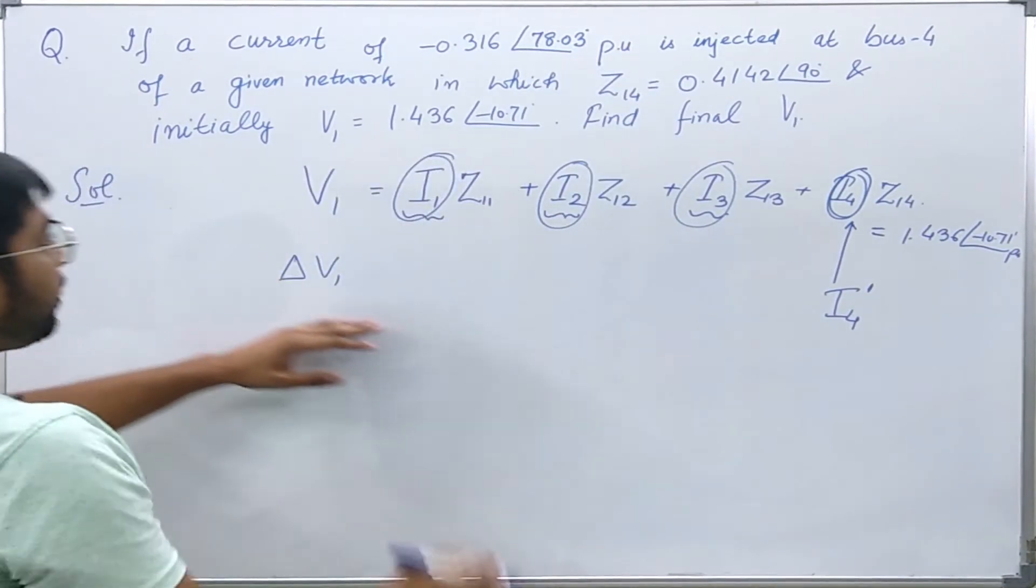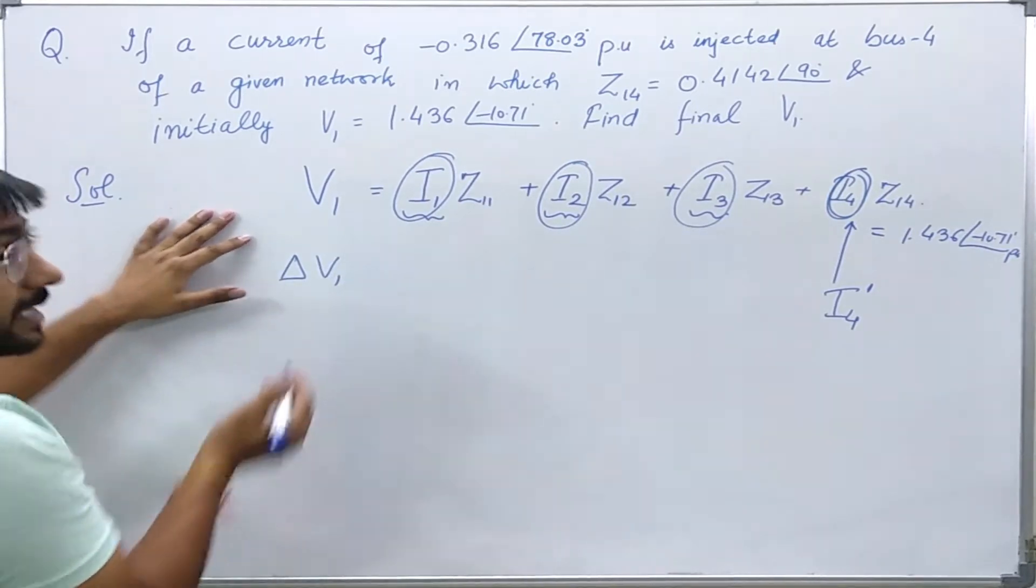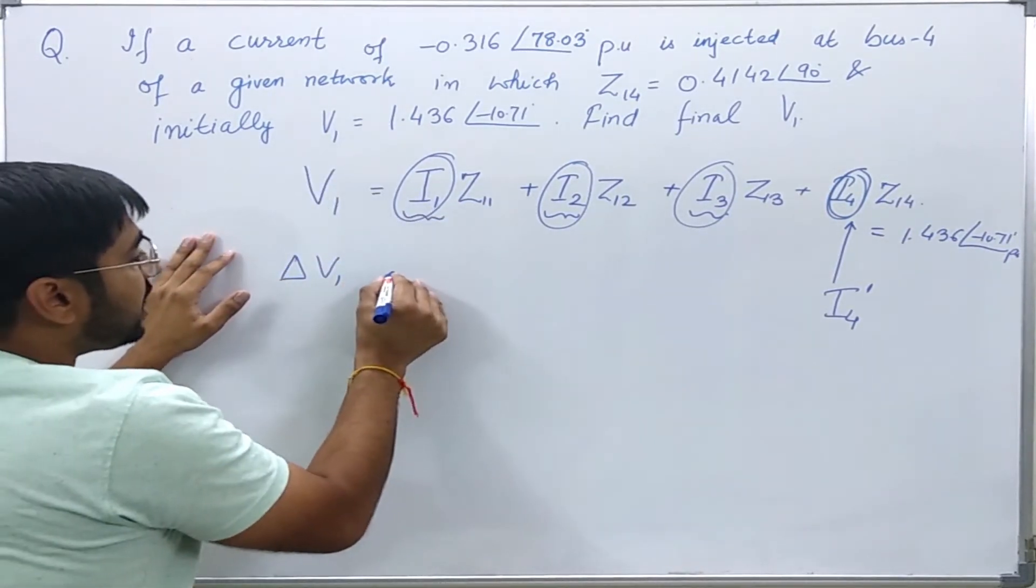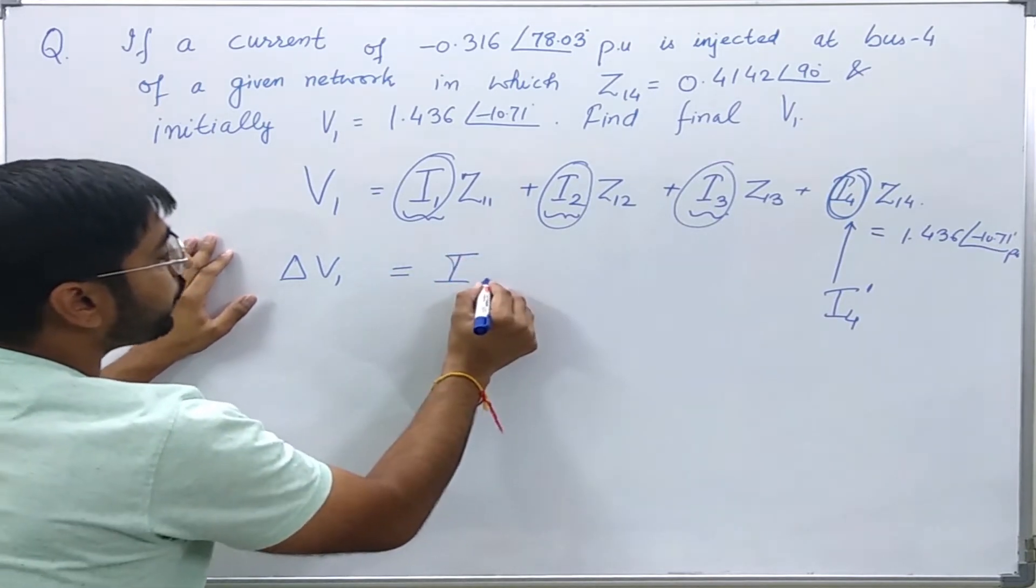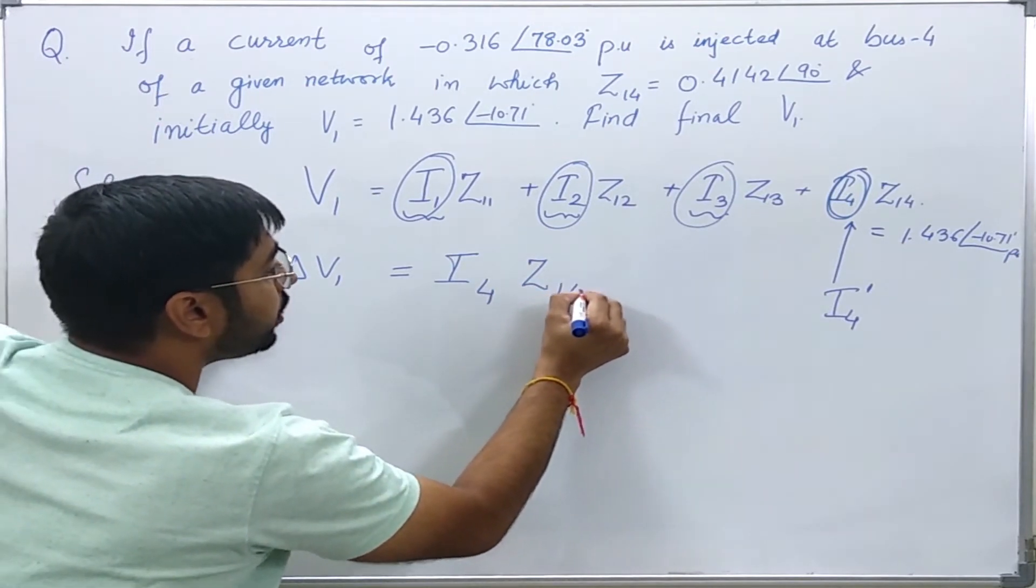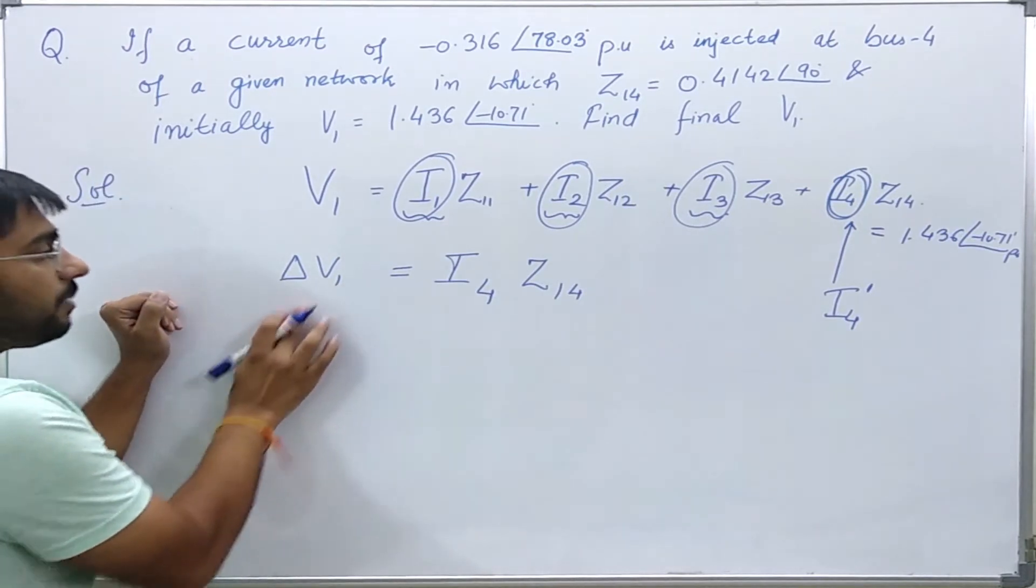As I have told in our previous lecture, the multiplication of these two kinds of values will give me the effect of that source only on that bus voltage.